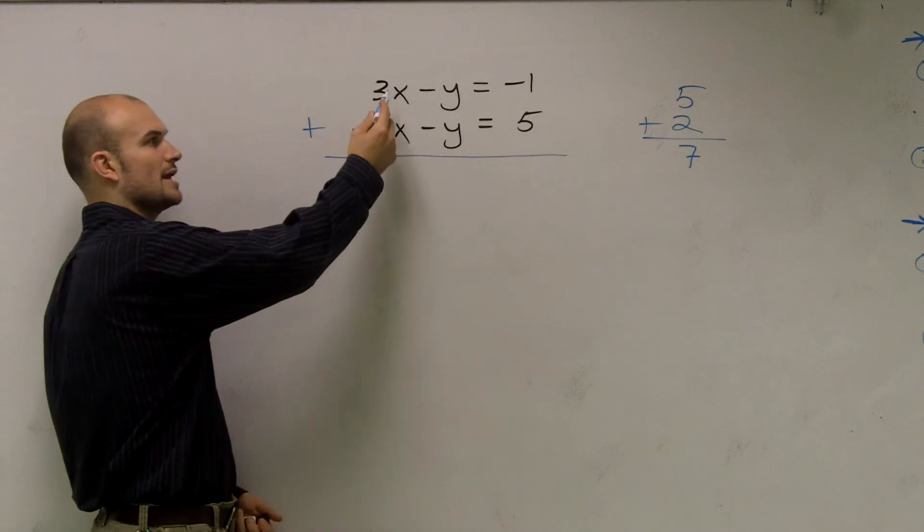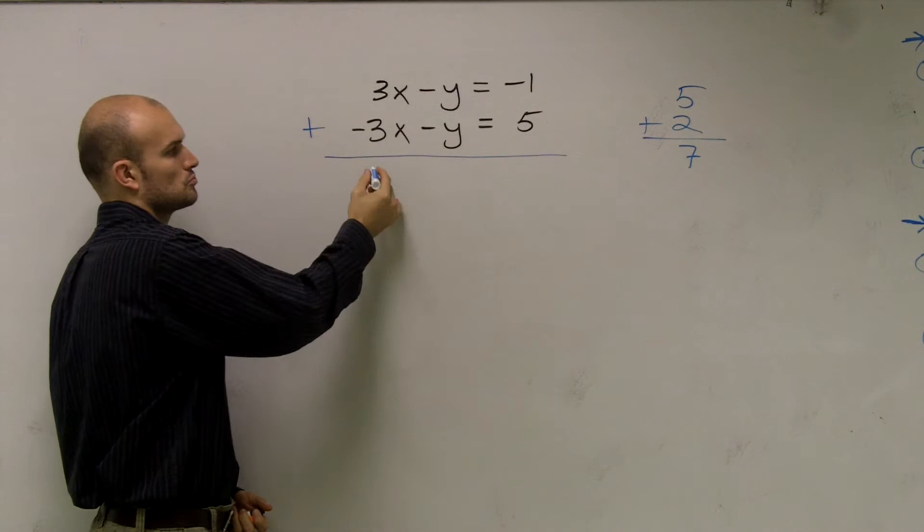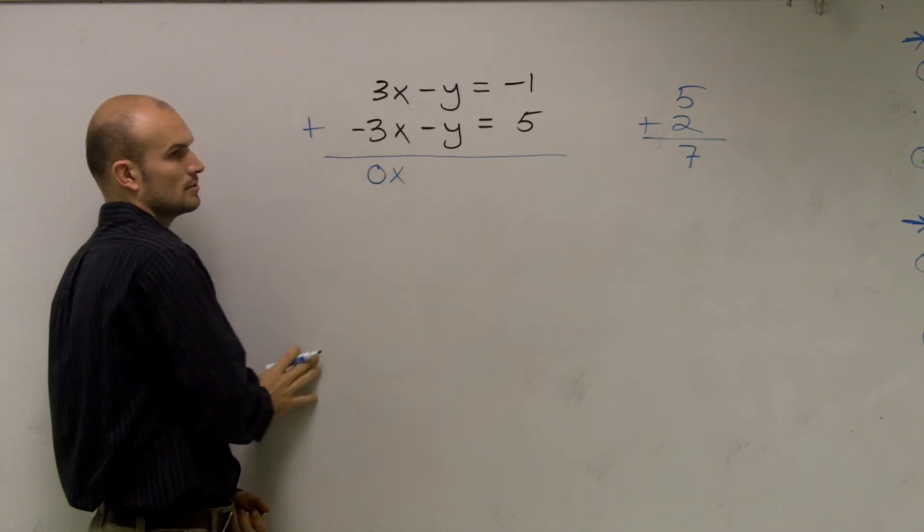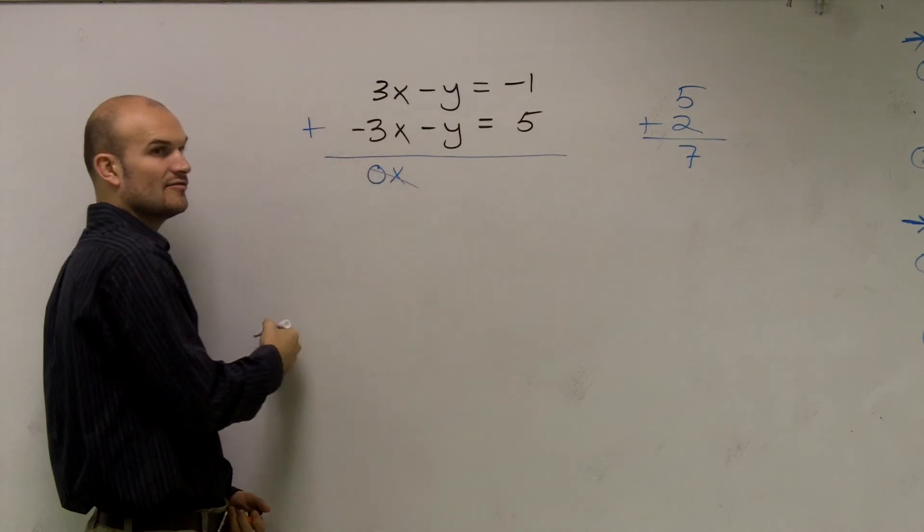So let's look at it. 3x minus 3x, or 3x plus negative 3x. Zero times x, zero, right? So what I did was I eliminated the variable.